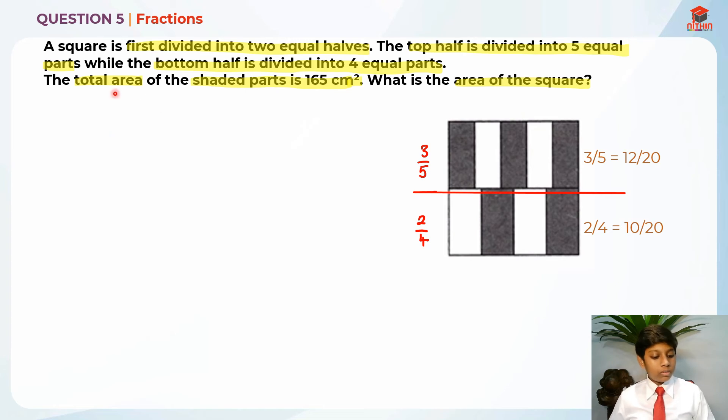And we know that the total area of the shaded parts is 165 cm². So I'm going to take the numerator of both of these. So 12 plus 10 units, which will give us 165 cm². So 22 units is basically 165. So I can find 1 unit which is 165 divided by 22, which will give us 7.5.